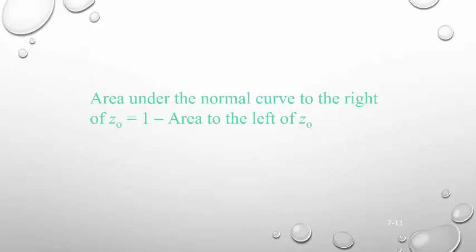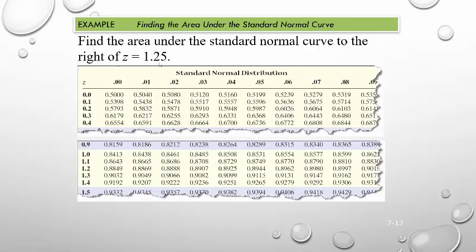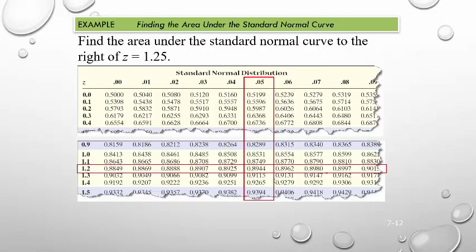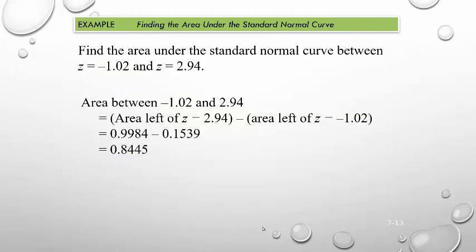Remember to find the area to the right, you just look it up and subtract the area to the left that you find, always. Find the area under the standard normal curve to the right of z equals 1.25. I want to find the area to the right. So I'm going to go on my table. Last digit is a 5. First two digits is 1.2. Where they intersect is 0.8944. Remember, that's the area to the left. So to find the area to the right, you do 1 minus that. So 1 minus 0.8944 is 0.1056.